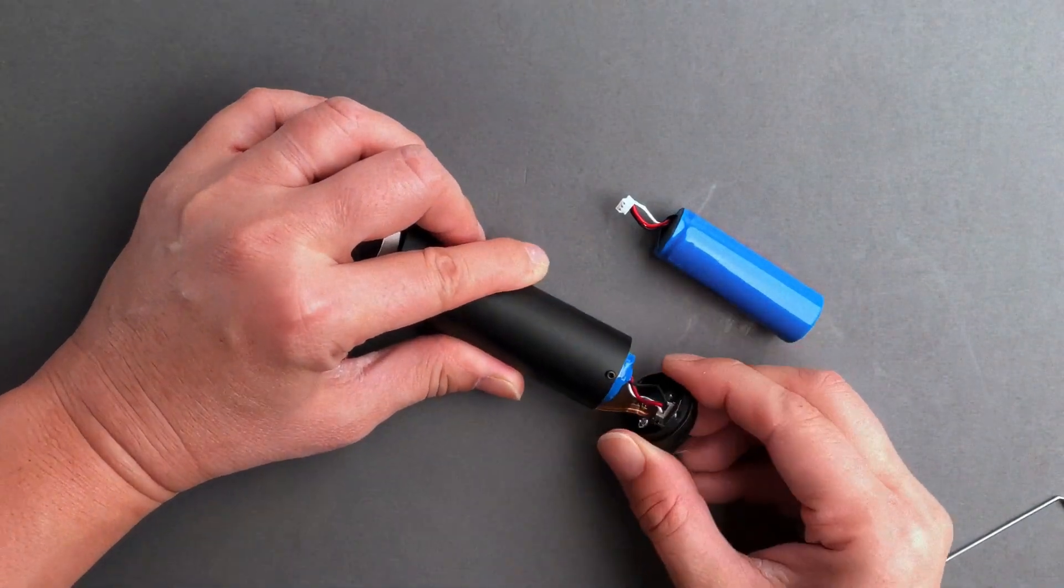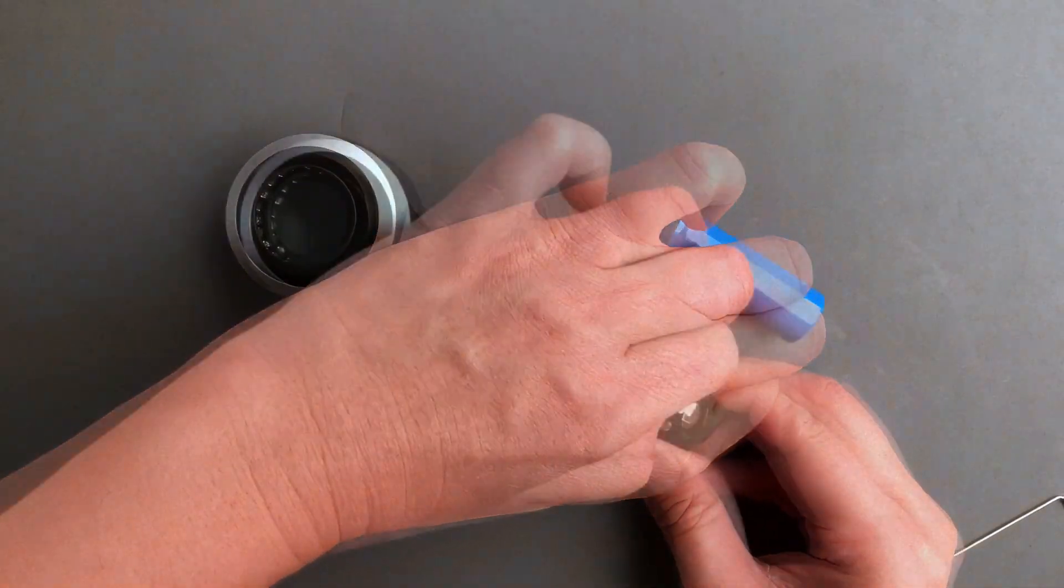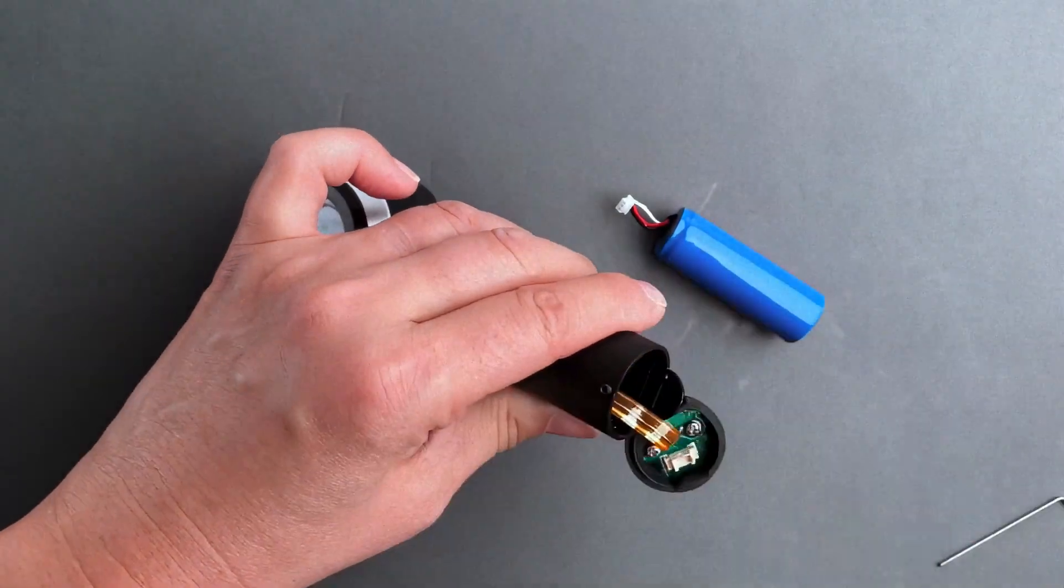Once loosened, you'll then pull the battery cap off and disconnect the white battery connector. Remove the old battery and dispose of it safely.